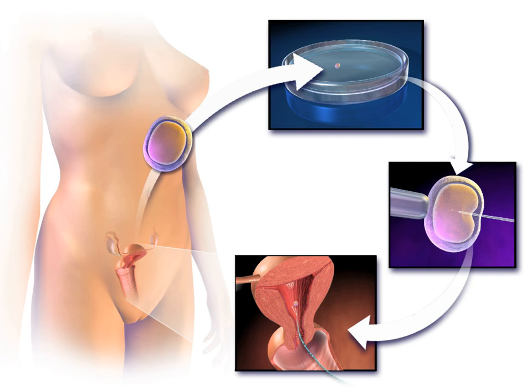With ART, the process of sexual intercourse is bypassed and fertilization of the oocytes occurs in the laboratory environment. In vitro fertilization: In the US, the Centers for Disease Control and Prevention — required as a result of the 1992 Fertility Clinic Success Rate and Certification Act to publish the annual ART Success Rates at US Fertility Clinics — defines ART.